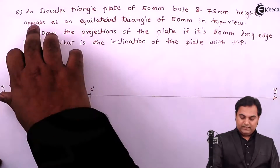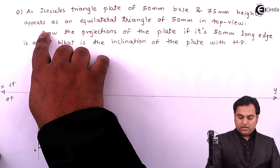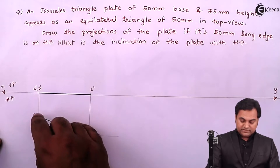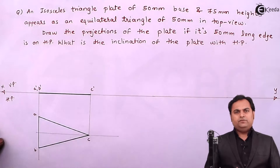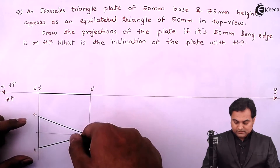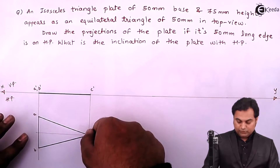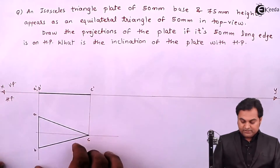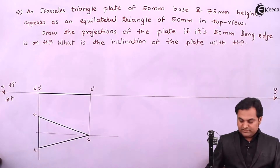The condition is given: the isosceles triangle plate of 50 mm base and 75 mm height appears as an equilateral triangle of 50 mm in the top view. We have to keep edge AB constant because it is 50 mm and we want an equilateral triangle of the same size. So AB is fixed. I'll lift this triangle about point C — as I lift about point C, the two sides AC and BC will reduce until I get a side of 50 mm, giving the equilateral triangle.